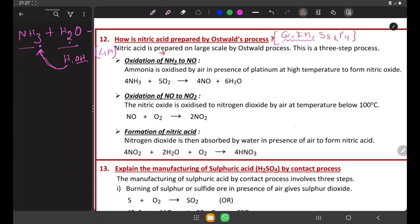Nitric acid is prepared on large scale by Ostwald's process. This is a three-step process. We will discuss step by step. The first process, oxidation of ammonia to nitric oxide. See here, the ammonia undergo oxidation to give nitric oxide.